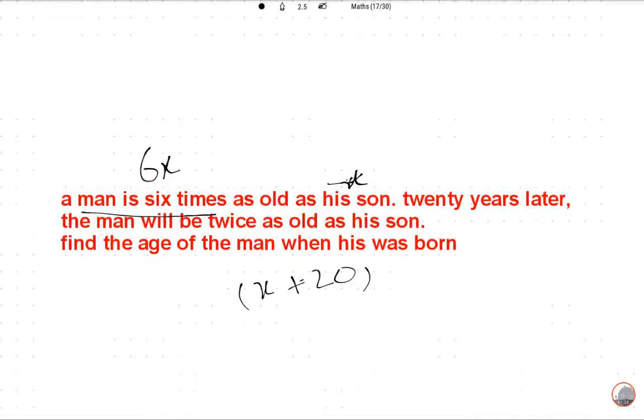The age of the man 20 years later, this is six times. So now my age of man is 6X, six times. After 20 years will be 6X plus 20. So how this data we will merge?